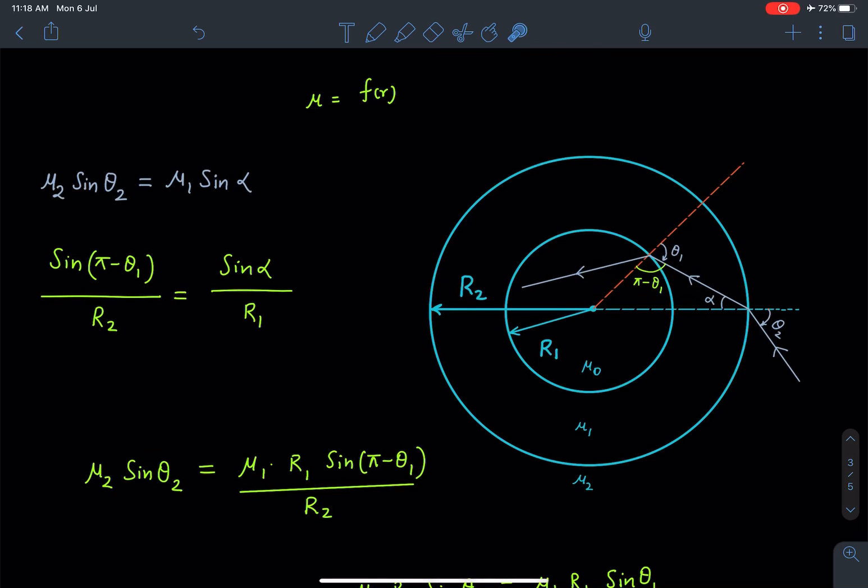At the first interface, if I assume this angle to be α, I can write μ₂ sin θ₂ equals μ₁ sin α by applying Snell's law for one interface. After that, in this triangle I apply the sine rule which gives sin(π - θ₁) divided by this distance in front of it, that is r₂, and similarly sin α divided by r₁.